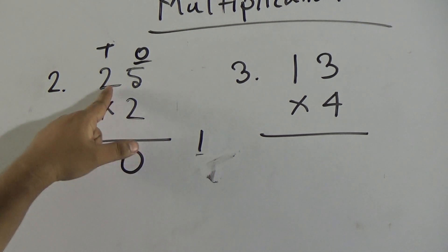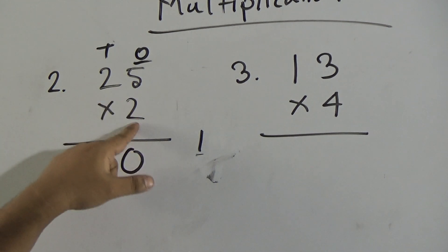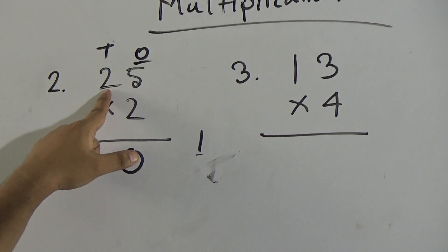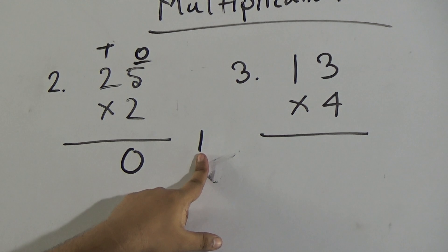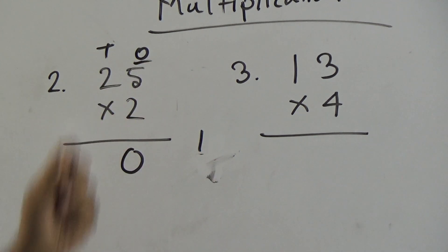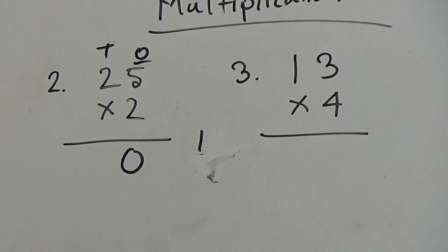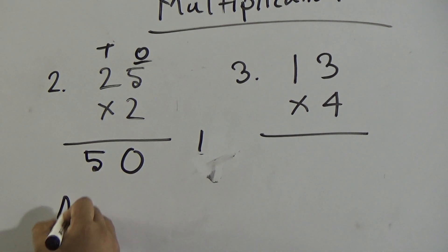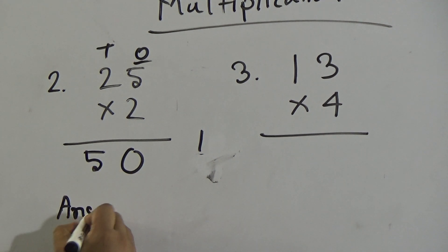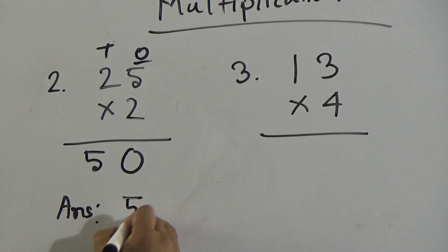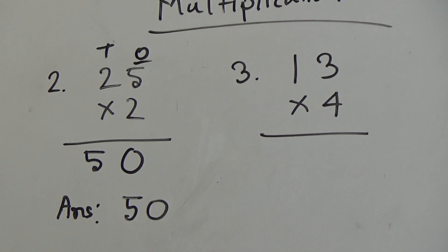Now we count times table 2 for the tens digit: 2 ones are 2, 2 twos are 4. Adding the carrying 1 to 4 gives 5. So the answer is 50. I hope you have understood. We must write: Answer = 50. If you don't write the answer, some marks will be deducted from your answer script.